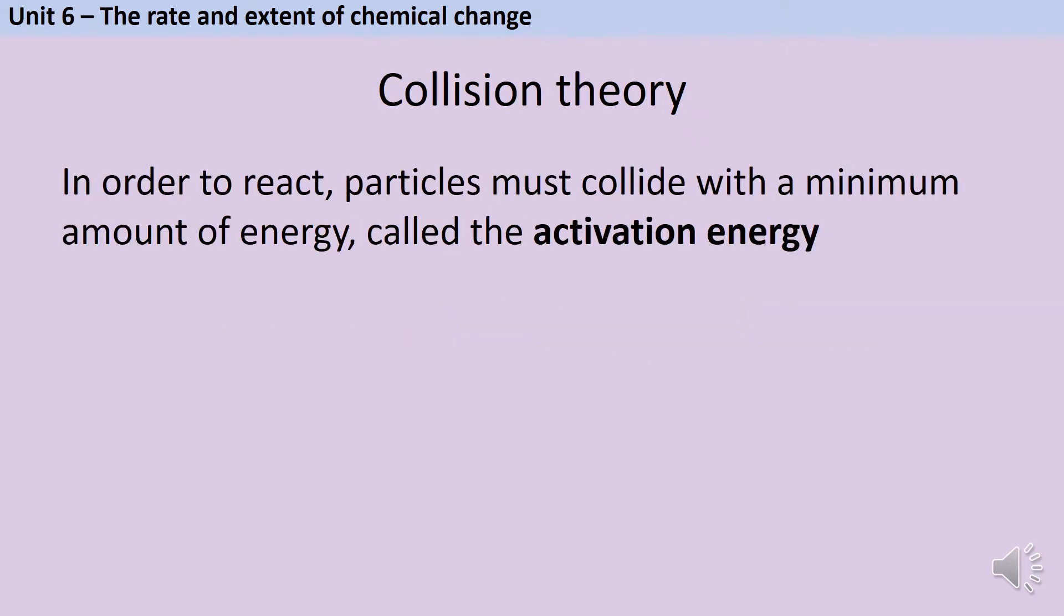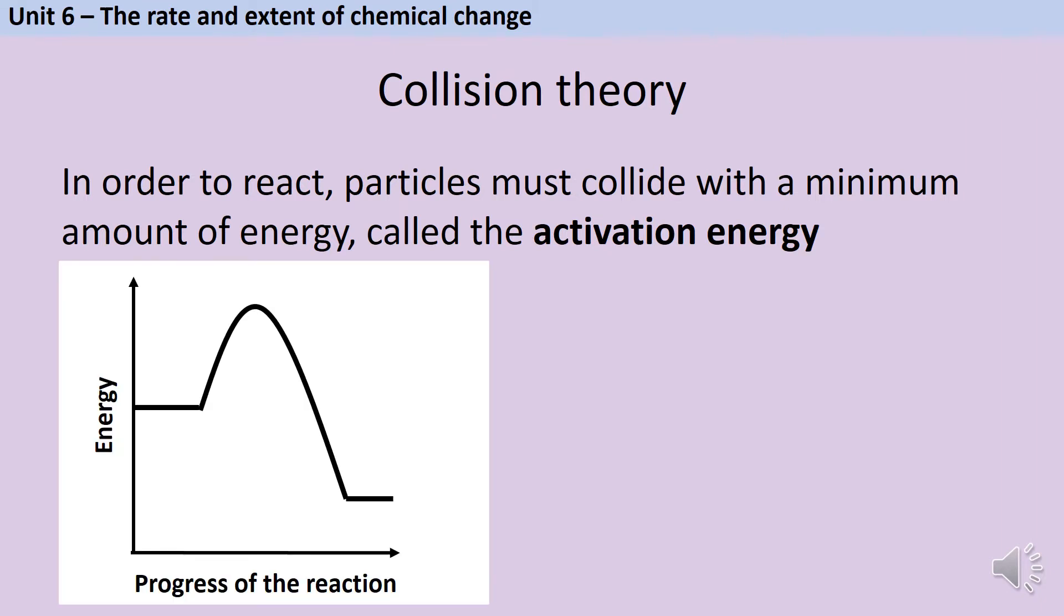In order to explain why the rate of reaction changes we need to use something called collision theory. Collision theory is the idea that in a chemical reaction the particles won't react unless they collide, which means bang into each other, and unless they have a minimum amount of energy which is called the activation energy. On an energy profile diagram the activation energy is represented by the height of the hump. It's the energy that needs to be absorbed by the reactant particles in order to break their bonds so that the atoms are free to form new ones. You show it with an arrow that goes from the height of the reactants up to the peak which is where the atoms are in their transition state.